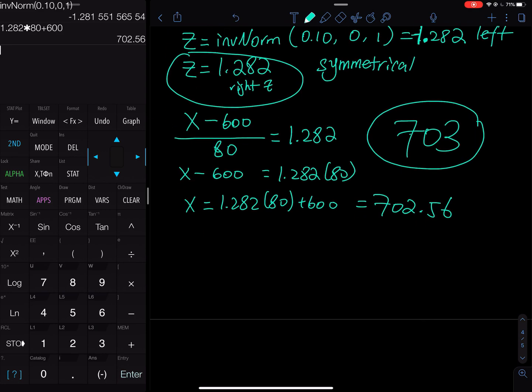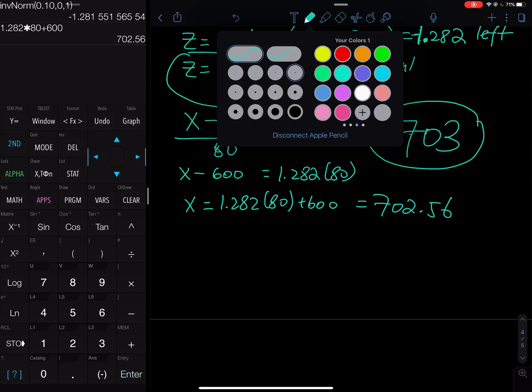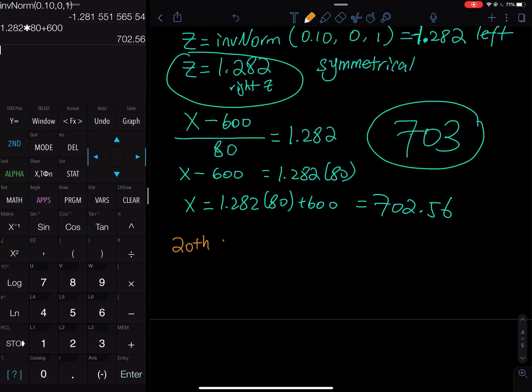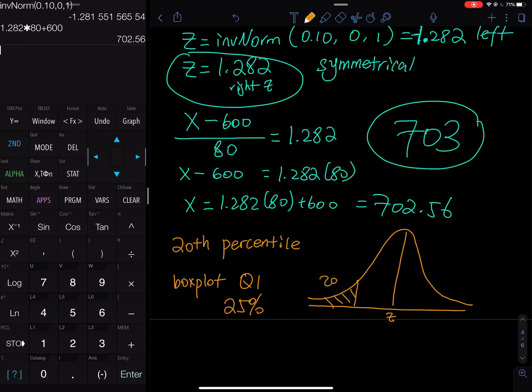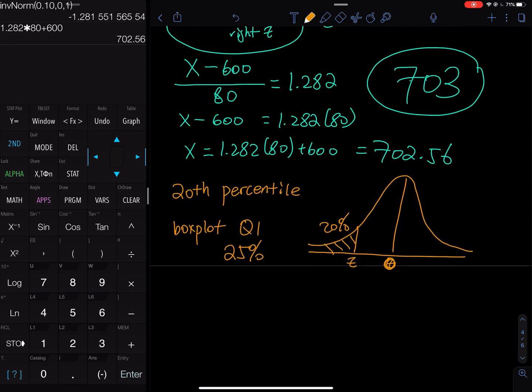The first one is top 10 percent. The next one, they won't say bottom 20 percent. The language they use is 20th percentile. When you see a problem on a test or homework, they'll write 20th percentile. Do you still remember the box plot? Do you remember what Q1 is? Q1 is 25th percentile. That means the first 25 percent. Percentile means the first. So 20th percentile means 20 percent on the left-hand side. This is a standard normal curve, you have Z in the middle. 20 percent is right here, on the left. The mean is zero, right in the middle. If they don't use the word top or upper, they use the word percentile only, that means left.